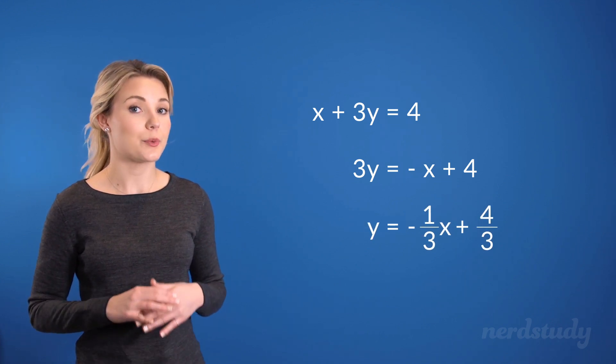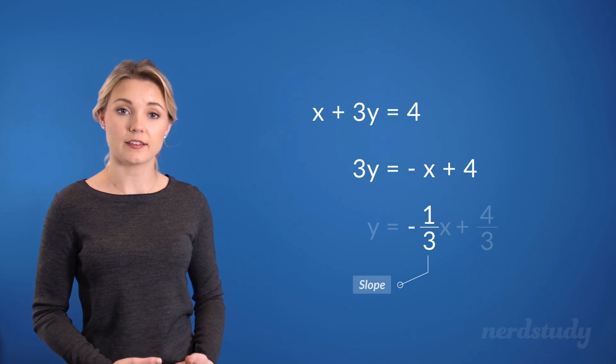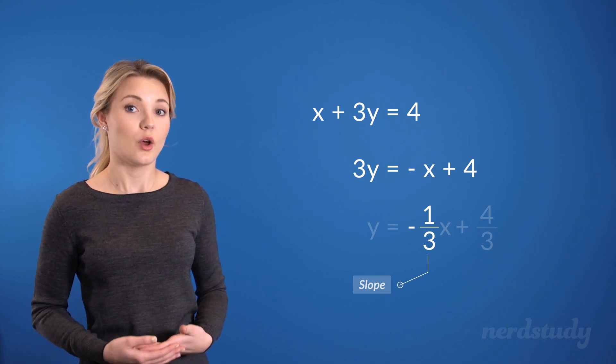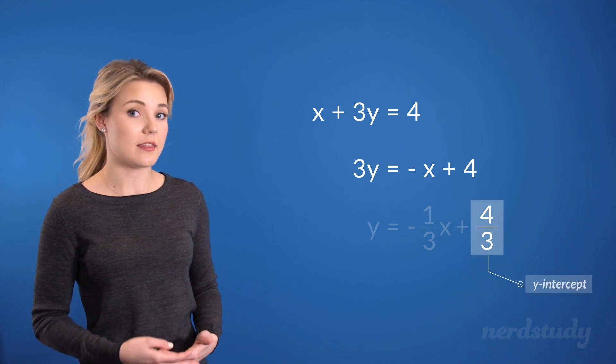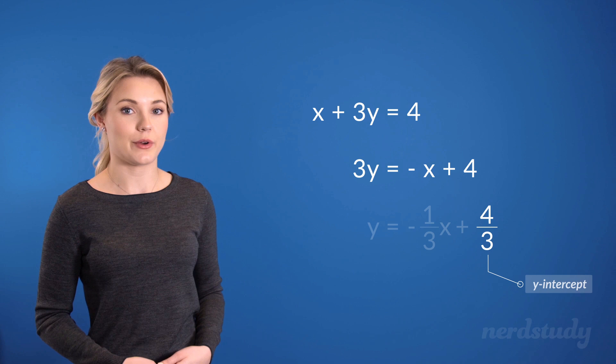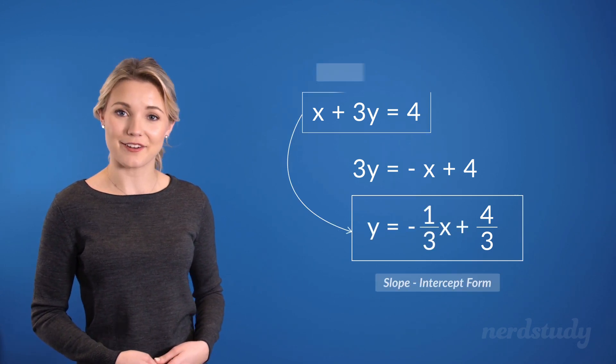Now, of course, we already learned that our slope here is the value in front of the x when y is isolated, which is negative 1 over 3, and our y-intercept is just the b in this form, which is 4 over 3. So there is our slope-intercept equation from the standard form.